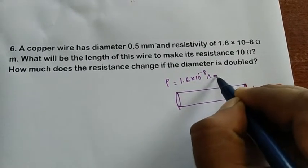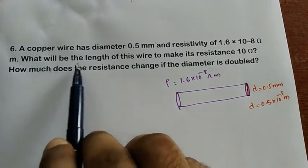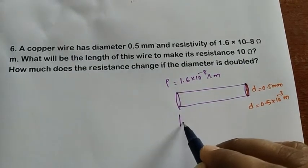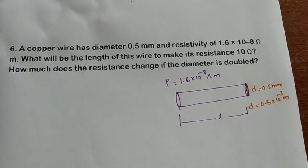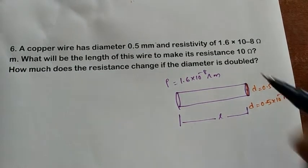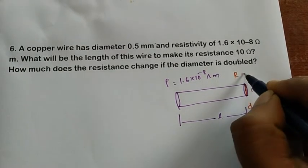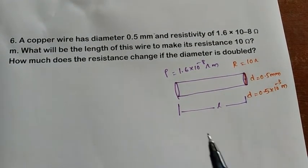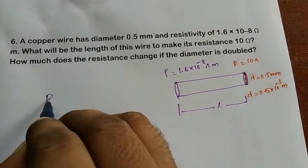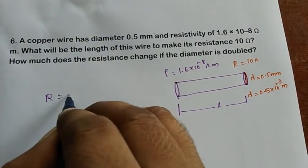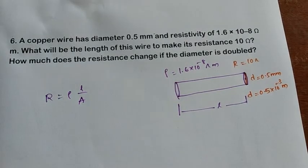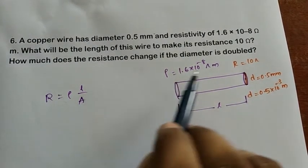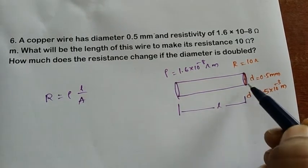The question asks: what will be the length of the wire to make its resistance 10 ohms? So we need to find the length such that resistance R = 10 ohms. We use the formula: resistance R = ρL/A, where rho is resistivity, L is length of the wire, and A is the cross-sectional area.